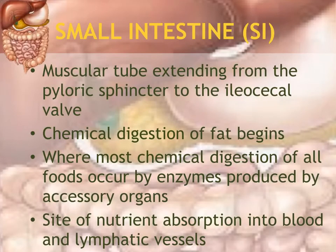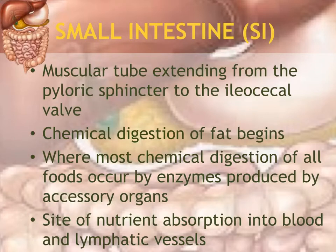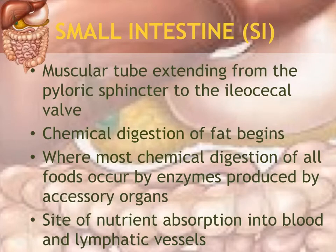After the stomach comes the small intestine. It is a muscular tube extending from the pyloric sphincter, which is between the stomach and the small intestine. The pylorus is the last funnel-shaped portion of the stomach connected to the first portion of the small intestine. The end portion is called the ileocecal valve, because the last portion of the small intestine is called the ileum, and the first portion of the large intestine is called the cecum.